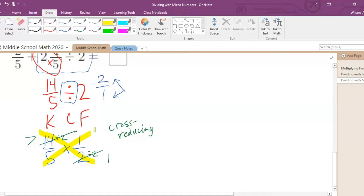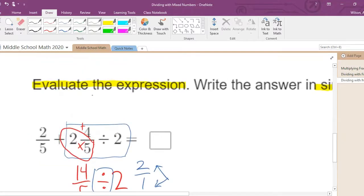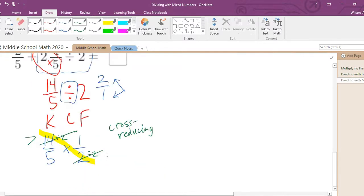But I see we can cross reduce. I see a common factor of two. This is called cross reducing. Cross reducing is basically simplifying fractions before you multiply them. So we have fourteen divided by two. That turns into a seven. And two divided by two turns into a one.